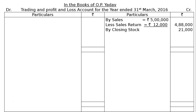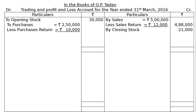Closing stock is an adjustment and will be shown on the credit side of the trading account as well as in the asset side as current assets in the balance sheet. Now, come down to the debit side to write down factory expenses, purchases, and opening stock. To opening stock Rs. 30,000. To purchases Rs. 2 lakhs 50,000, less purchases return Rs. 10,000, giving net purchases Rs. 2 lakhs 40,000 in the final column.